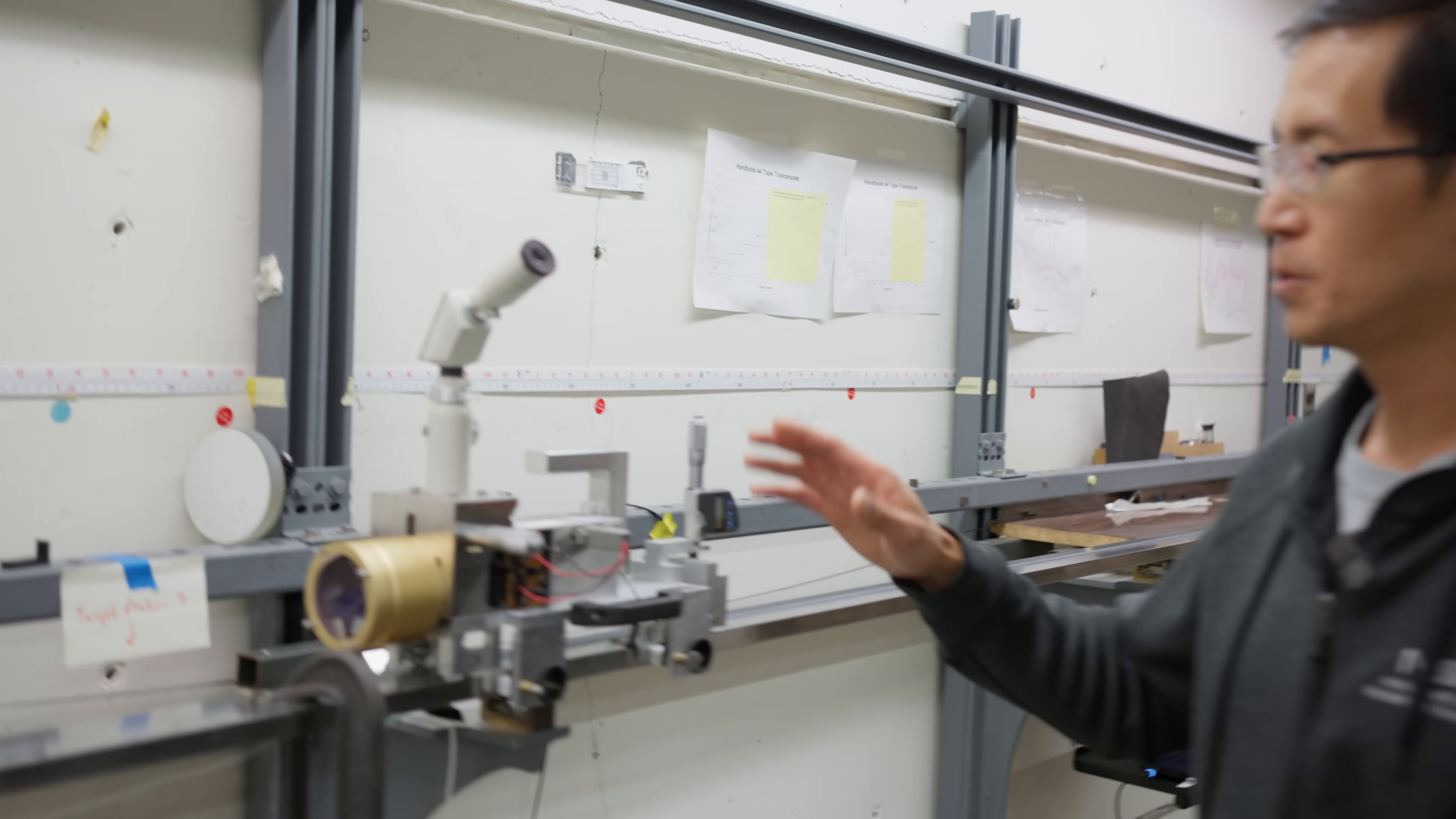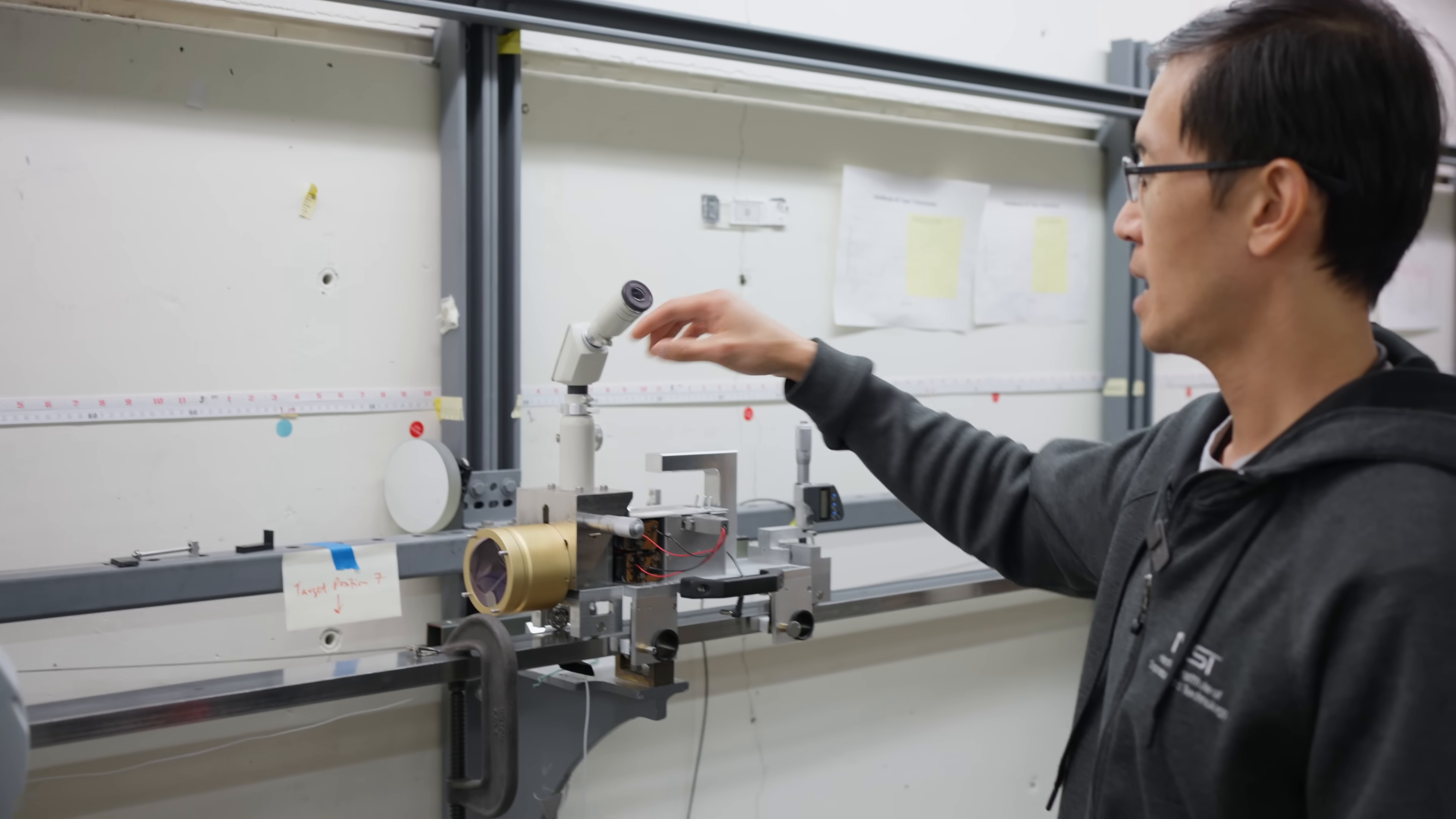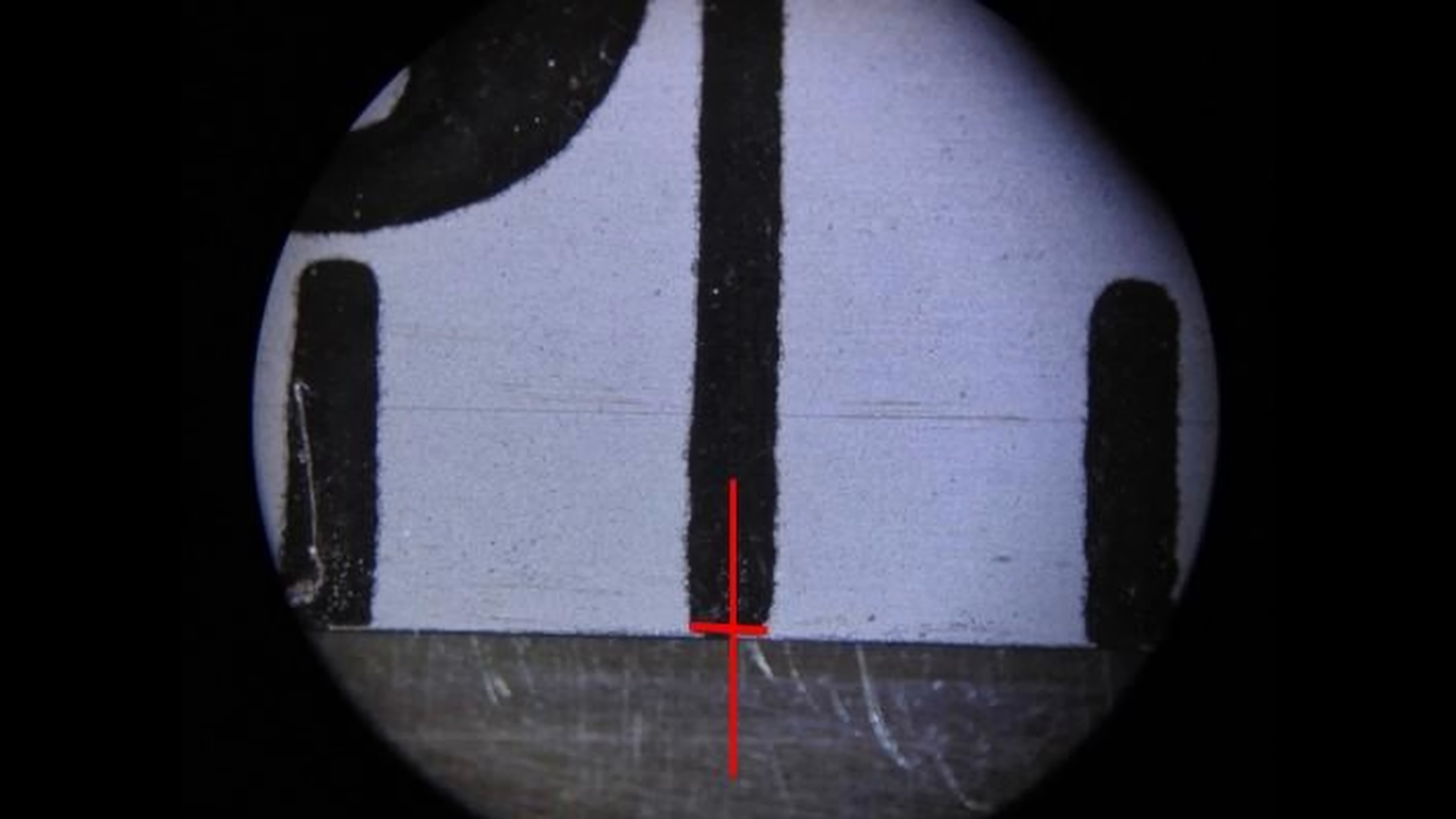So in order to tie in the reference laser measurement to the measurement tape, we have this tape carriage, which uses the retroreflector, which interfaces with the laser interferometer, and an optical microscope that has a set of crosshairs for you to look through and align to the hash mark that you want to measure. So right now, I have it aligned to the zero mark of the tape.